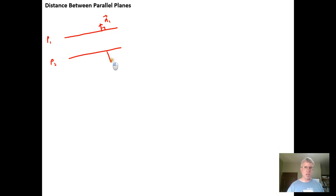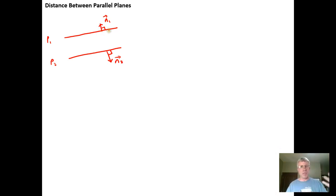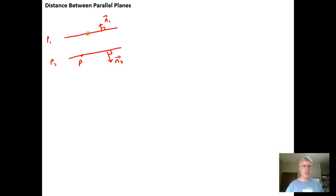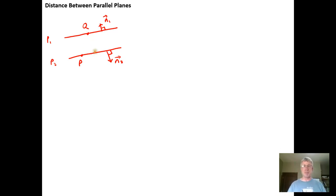The normal vectors may point in the same direction or in opposite directions — it's not important. The fact is, if we know the coefficients on x, y, and z for the planes, we know normal vectors for both planes. And if I want to find the distance between the two planes, all I really need to do is find a point P in one plane and a point Q in the other plane. If I know the distance from Q to the plane, then I know the distance between the two planes.